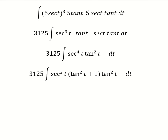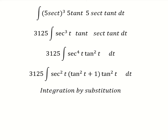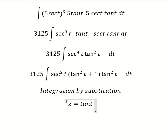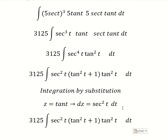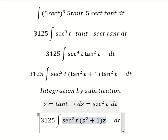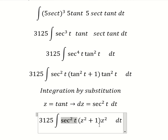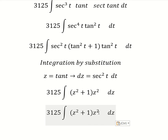So we can use integration by substitution. I will let z equal tan(t). We do the first derivative for both sides and we get the corresponding derivative. Then tan²(t) we change for z², and sec²(t) dt we change for dz. We multiply out the terms with z² and 1.